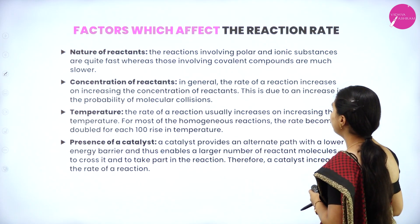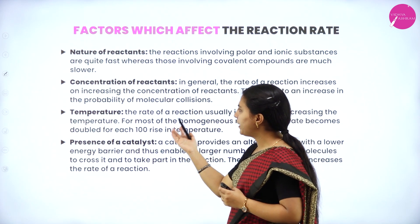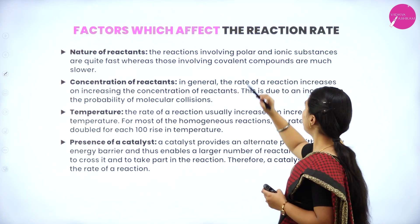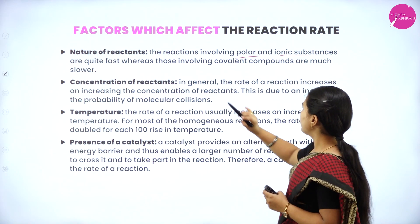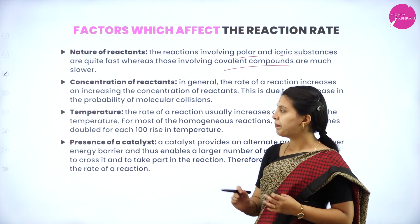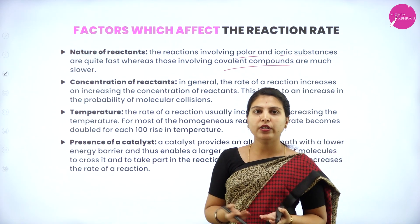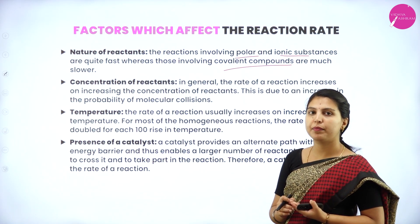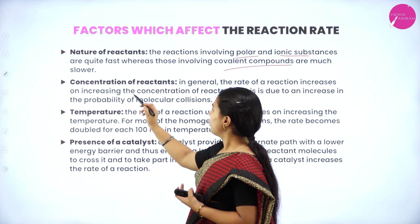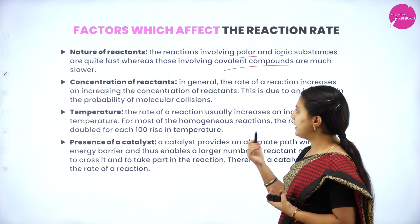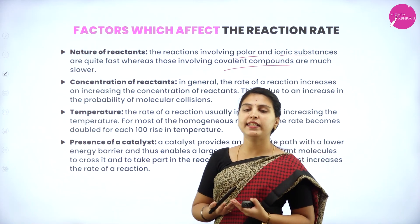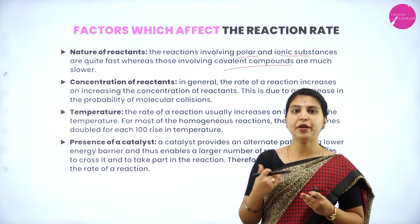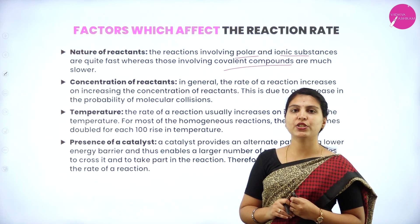Next, factors which affect the rate of reaction: nature of reactant, concentration of reactant, temperature, and presence of catalyst. Reactions involving polar and ionic substances are quite fast, whereas those involving covalent compounds are much slower. Regarding concentration of reactant — in general, the rate of reaction increases with increasing concentration of reactants, because higher concentration means greater probability of molecular collisions, leading to a greater rate of reaction.